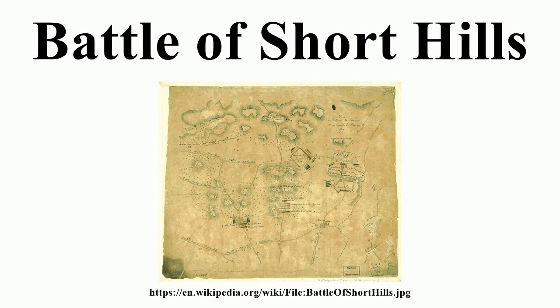Despite the name, no fighting occurred in modern-day Short Hills, a section of Millburn. In mid-June, General Howe marched most of his army into central New Jersey in an attempt to lure George Washington's Continental Army to a place where it might be better attacked than its defensive position in the Wachung Mountains.